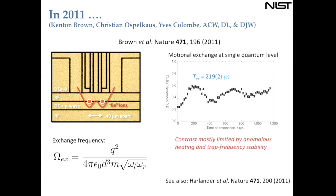One challenge with this experiment is that Kenton cooled to the ground state and observed single-phonon flopping backwards and forwards. By cryogenic standards, there was a significant amount of background heating washing out the oscillation. Another challenge is that the trapping potentials in both wells must stay frequency-matched — you must keep the frequencies stable over the relevant timescale of up to a millisecond. Ion separation is really the critical factor.